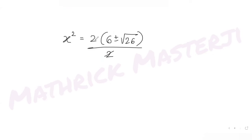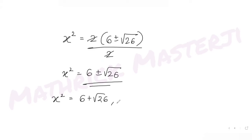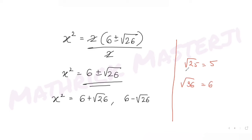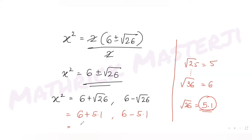So x² = 6 + √26 or x² = 6 - √26. Since √25 = 5 and √36 = 6, we know √26 is approximately 5.1. Therefore x² ≈ 6 + 5.1 = 11.1 or x² ≈ 6 - 5.1 = 0.9.